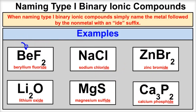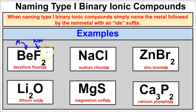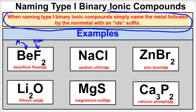We can tell because we have a metal bonded to a non-metal in every single one of these. Keep in mind that the most electronegative element gets listed first, which is why Be comes before F. The metal we're looking at comes from groups 1 or 2, or is either silver, zinc, or aluminum, making these type 1 binary ionic compounds. When naming a type 1 binary ionic compound, simply name the metal followed by the non-metal with an -ide ending.